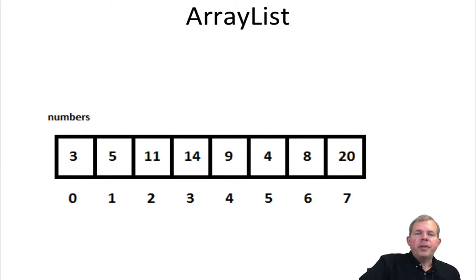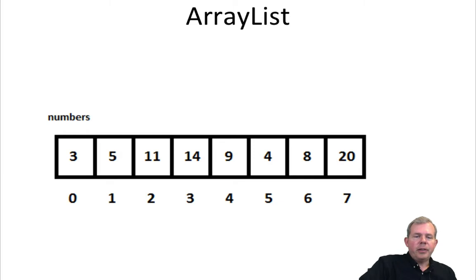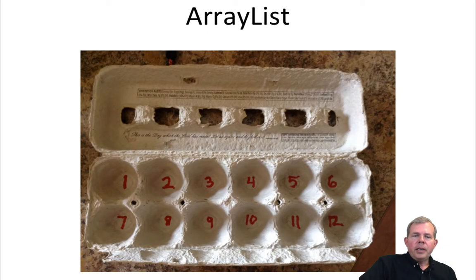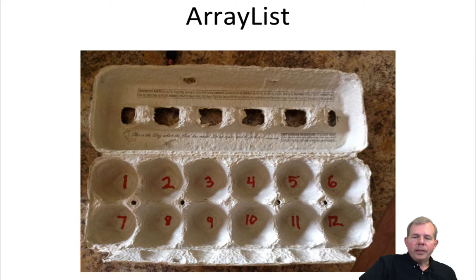Starting with the simplest of them, let's talk about an array list. You might already know what arrays are — array lists are basically arrays with extra functions built in. You can see a list of numbers where each position from 0 to 7 holds a different integer. Think of an array list as a box of eggs: there are 12 positions and you can put any object in each little cup. An array list is a container for a list of items.